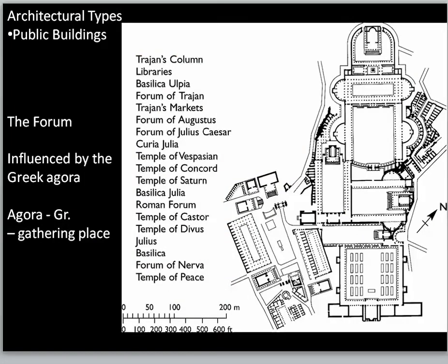Moving on to architecture for public spaces — not private. This is where we can see some of the influence of the Greek buildings, all of this coming from the Agora. If you've ever been to a live open-air flea market or swap meet, the Agora was sprawling and somewhat disorganized. As opposed to the Agora, the forum gives us a little organization, and that is most easily seen here.